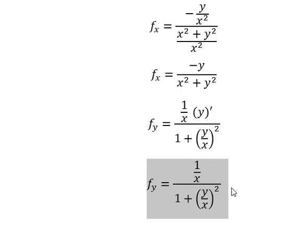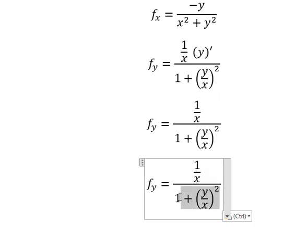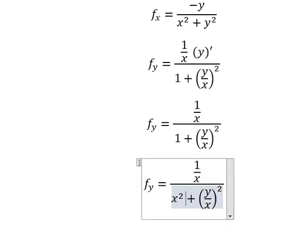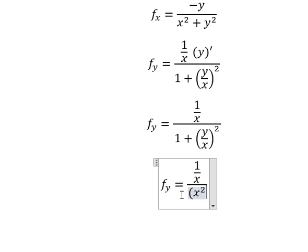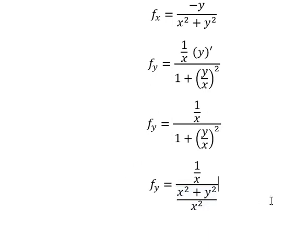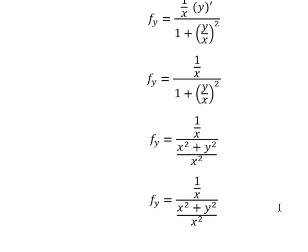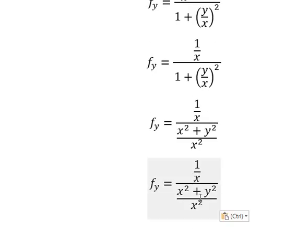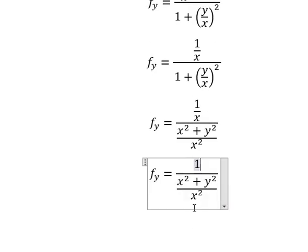Now this one we have x squared over x squared, so we have x squared plus y squared over x squared. Now we can simplify x and x, and we put x to the numerator. X goes to this one, and we have the final answer.